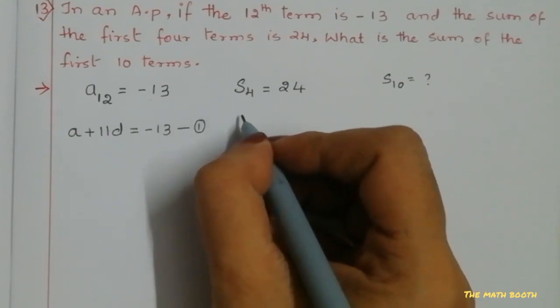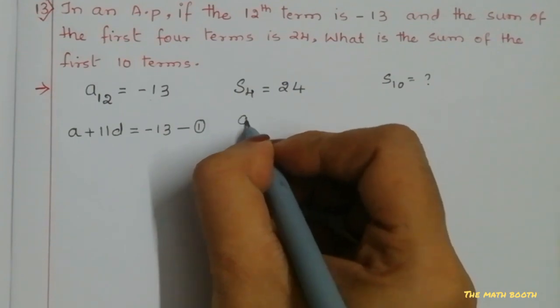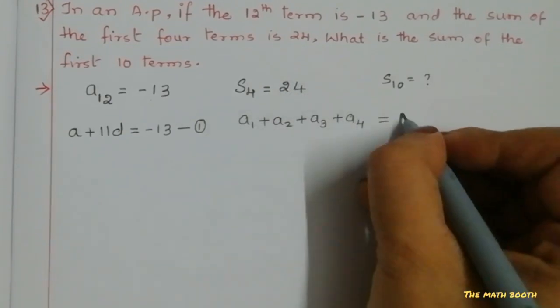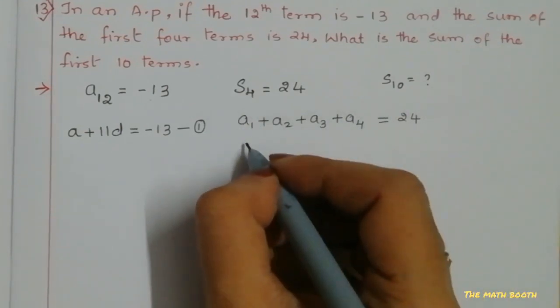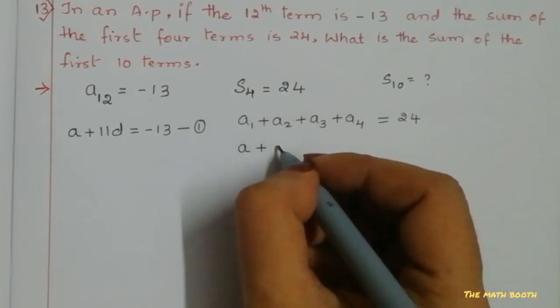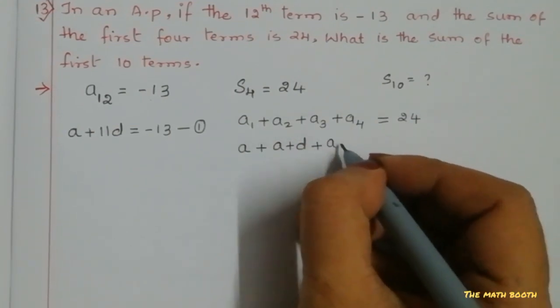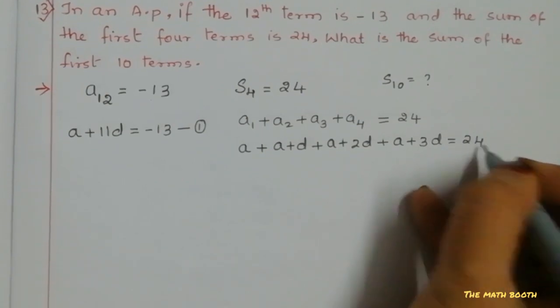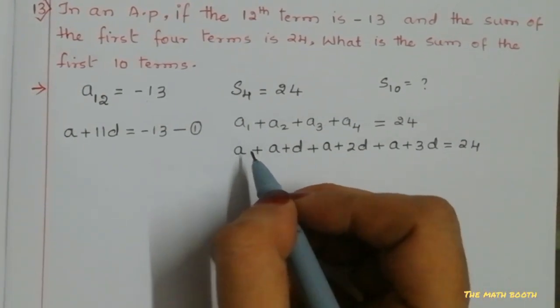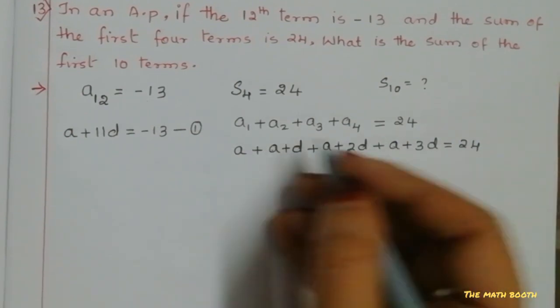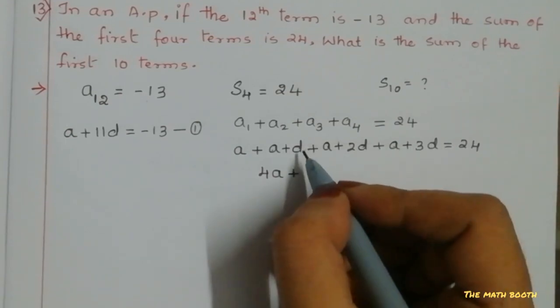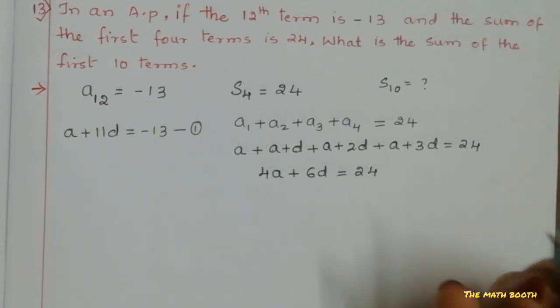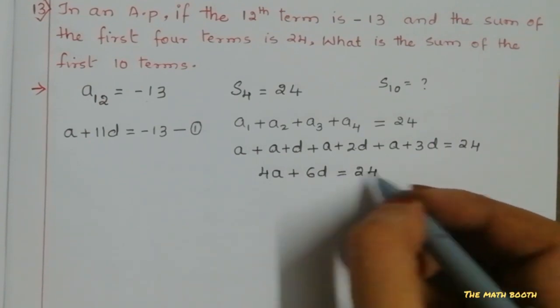Now S₄, we have the Sₙ formula, but we can also solve like this. We know that sum of first 4 terms: a₁ + a₂ + a₃ + a₄ equals 24. Now a₁ is a, second term is a + d, third term a + 2d, fourth term is a + 3d equals 24. How many a's? Let us count: 1, 2, 3, 4, so 4a plus how many d's: 1, 2, 3, 4, 5, 6. So 6d equals 24.